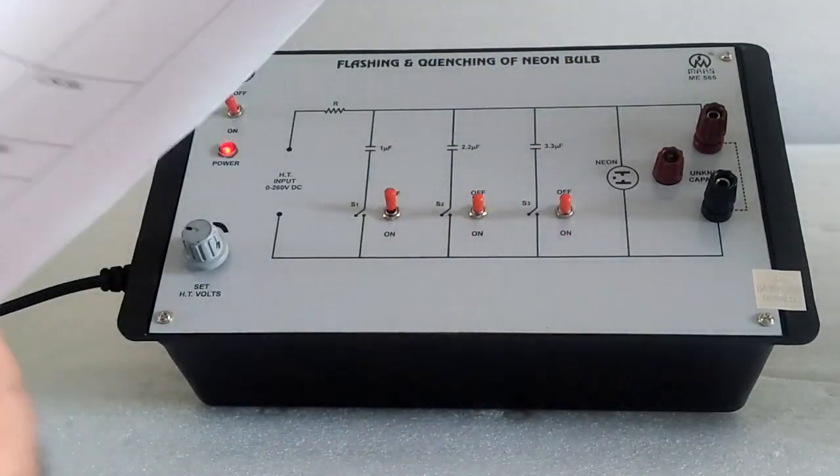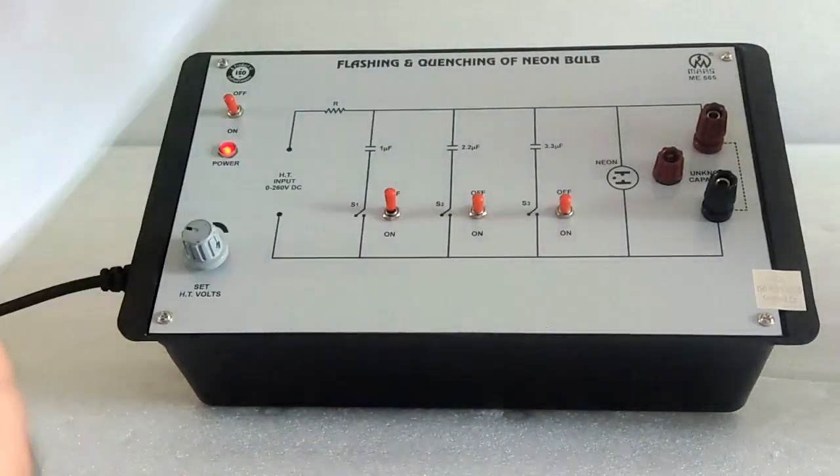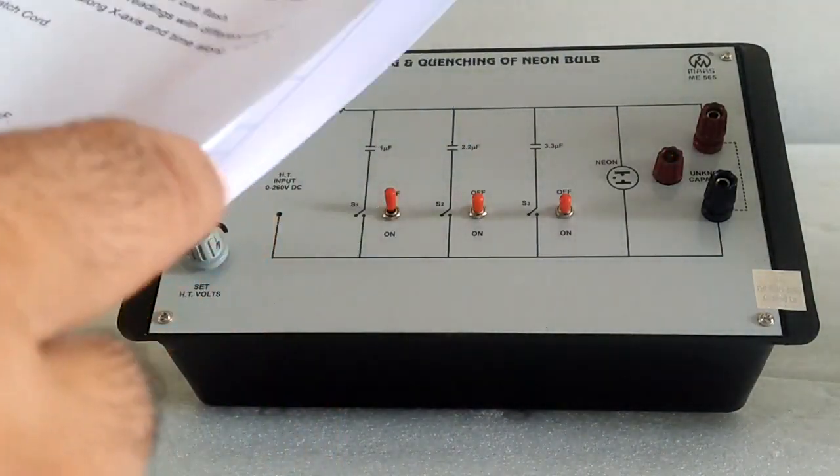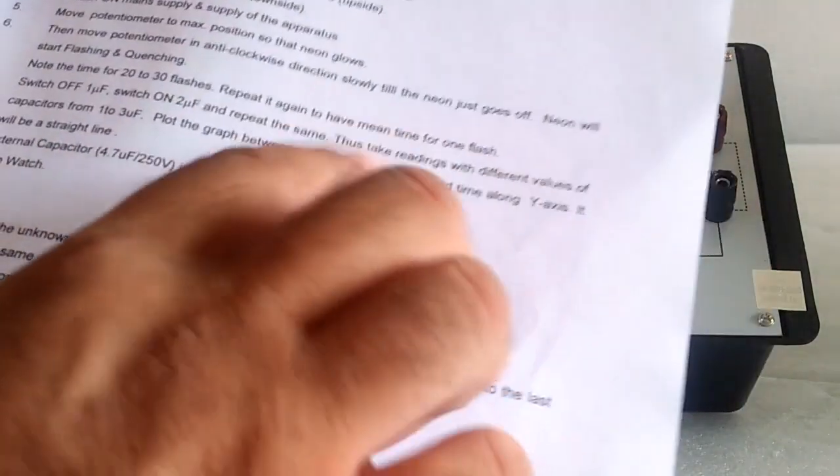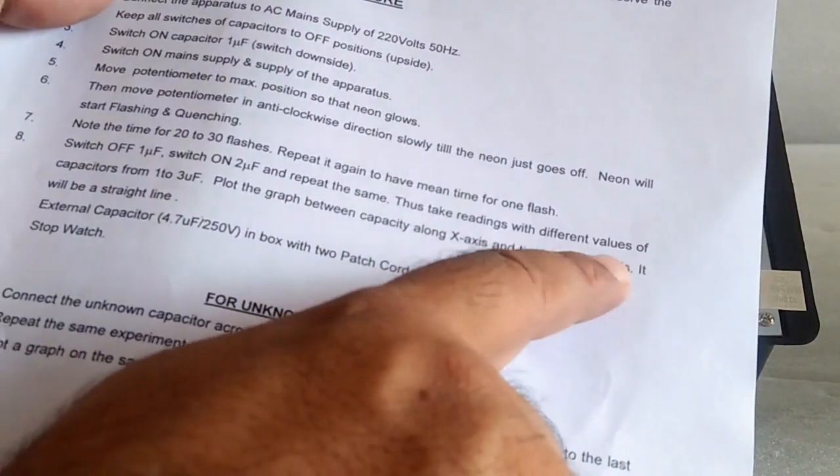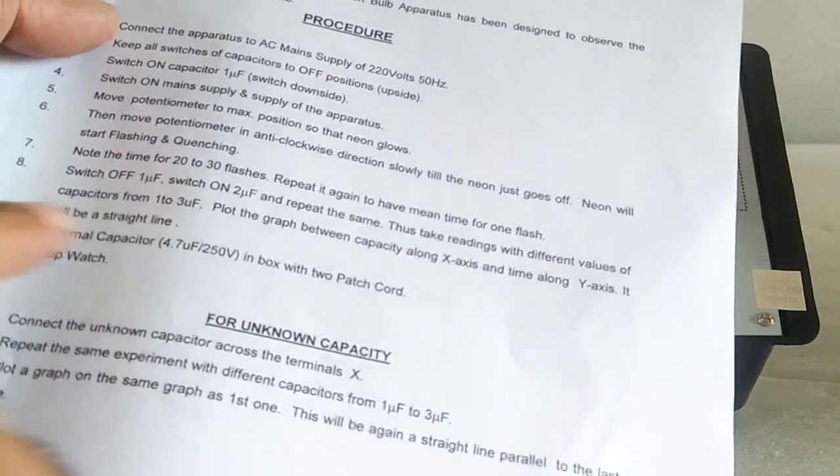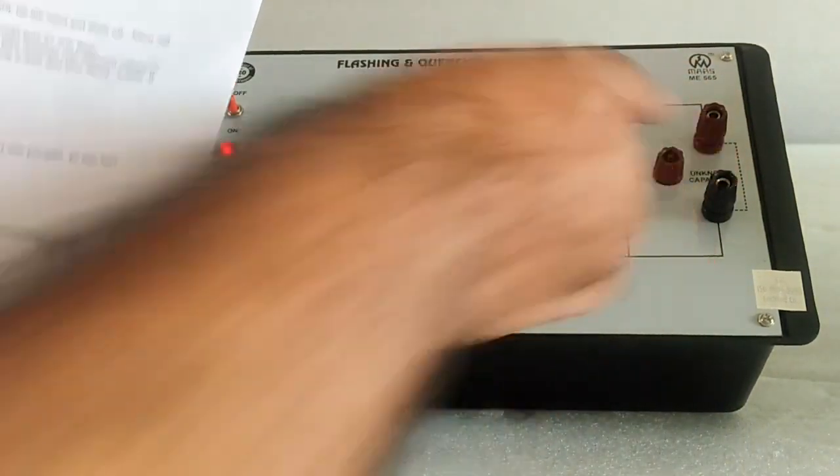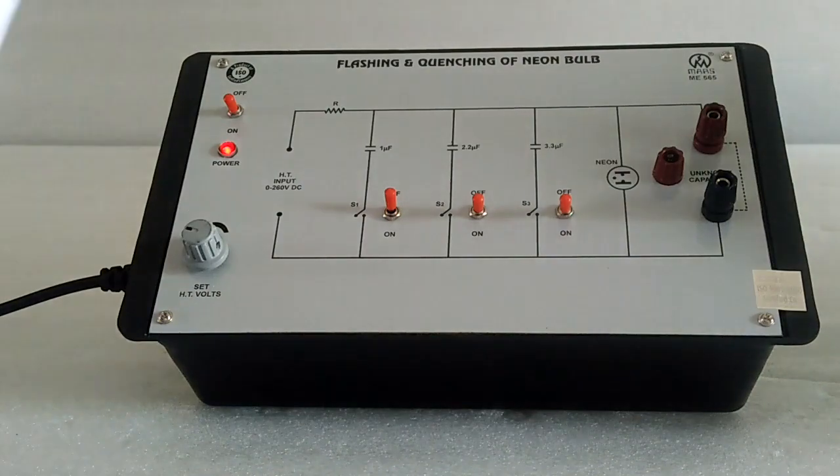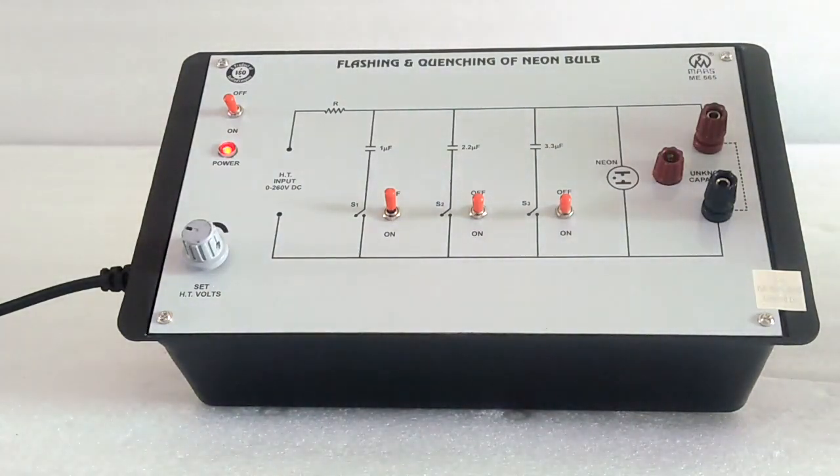Make the graph with the help of capacitance along the x-axis and time along the y-axis. It will be a straight line. Then for the unknown capacitor, connect the unknown capacitor across the terminal here and repeat the same experiment from 1 microfarad